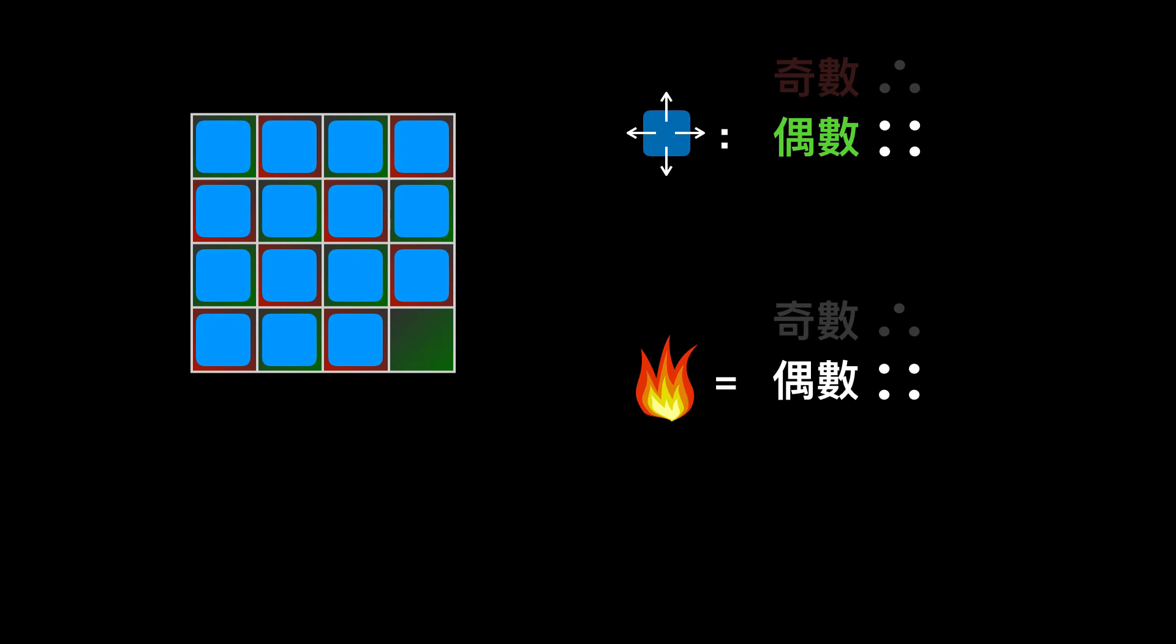Now, let's take out any two numbers and swap them. As I said, swapping any two numbers alters the rage of the puzzle. So now, the parity of movement count and the parity of rage differ.